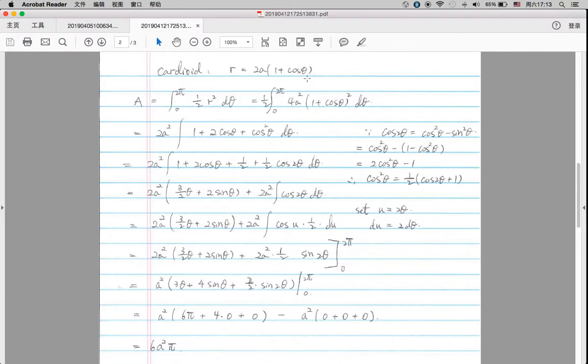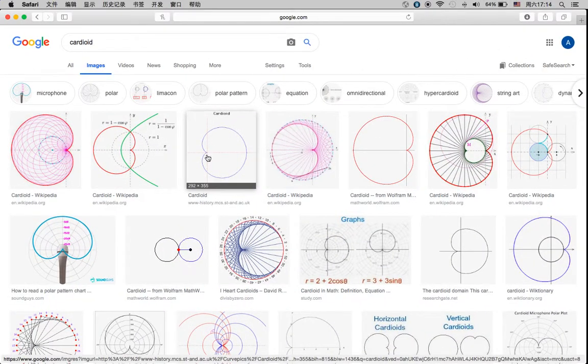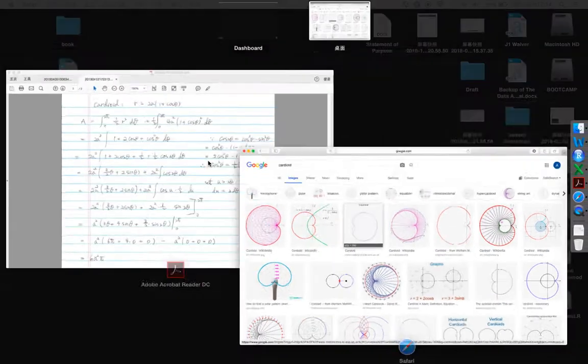And the generalized formula or the function that can define a cardioid is r equal to 2 multiplied by a constant and then multiplied by 1 plus cosine theta. So this is something you need to memorize, which would trace the line of a cardioid.